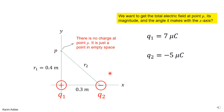The problem has two charges: a positive charge at the origin, and a negative charge located 0.3 meters away from the origin on the x-axis. Point P is located on the y-axis at a distance of 0.4 meters from the origin. There's no charge at point P — the dot just marks the location of point P in empty space.